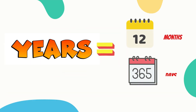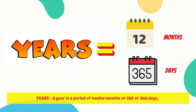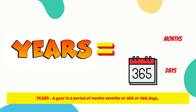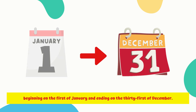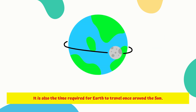A year is a period of 12 months, or 365 or 366 days, beginning on the 1st of January and ending on the 31st of December. It is also the time required for Earth to travel once around the Sun.